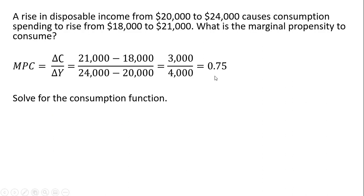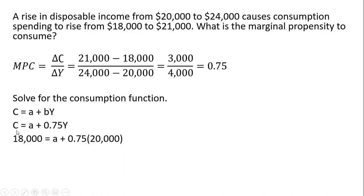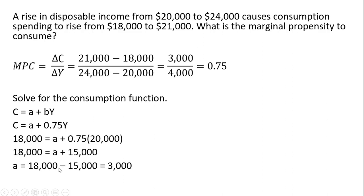We could also solve for the full consumption function. Our standard format is C equals A plus B times Y. We know B is 0.75. To solve for A — autonomous expenditure — we plug in C = 18,000 and Y = 20,000. Subtracting 15,000 from both sides gives A equals 3,000. That is our consumption function. We could have plugged in 21,000 and 24,000 and gotten the same result.